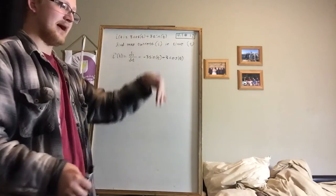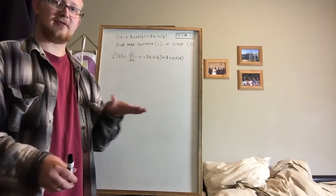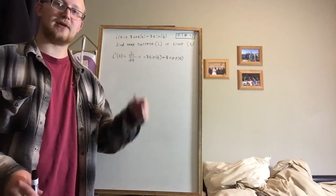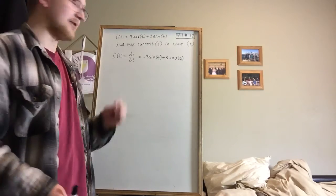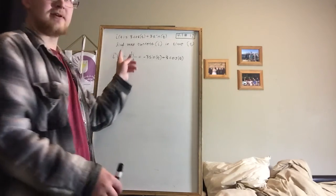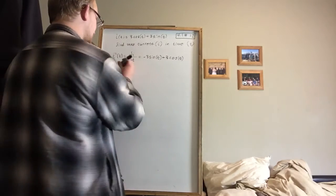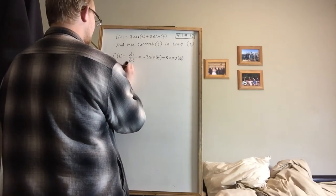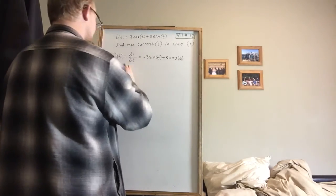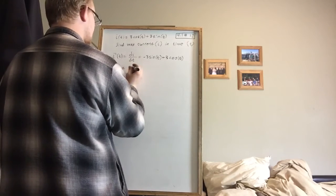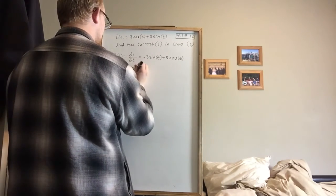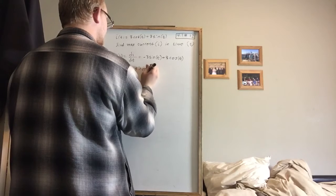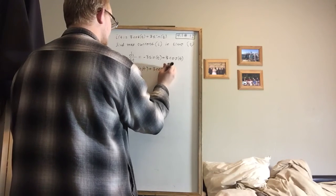Now remember that if we're looking for maximums and minimums, we're looking for when the slope of the graph, when the tangent slope of the graph is 0. So that means that we're going to set the derivative equal to 0 and solve for those points. Because the derivative is the equation for slope, or the rate of change. So 0 is equal to minus 3 sine t plus 3 cosine t.